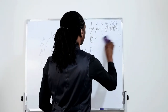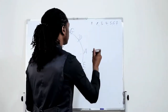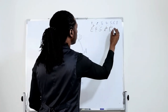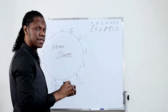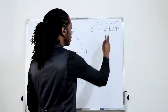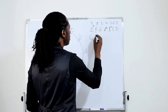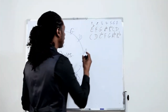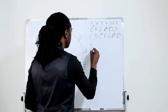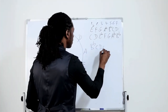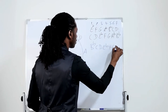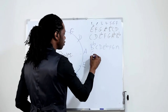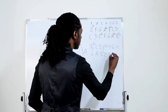How about E flat? E flat has three flats: E flat, F, G, A flat, B flat, C, D. The sixth degree of E flat is C, so we go C, D, E flat, F, G, A flat, B flat — that's C minor. For B flat, which has two flats: B flat, C, D, E flat, F, G, A. The sixth degree is G, so we have G, A, B flat, C, D, E flat, F — that's G minor.